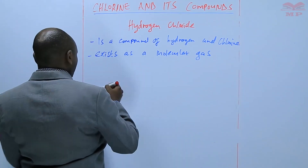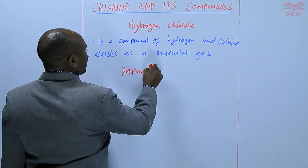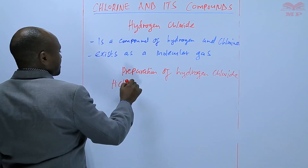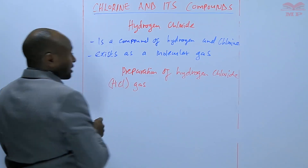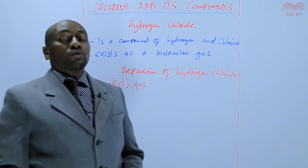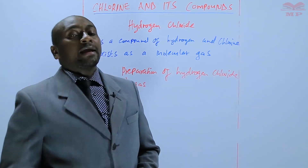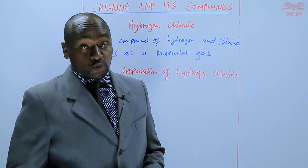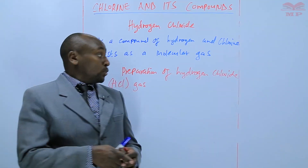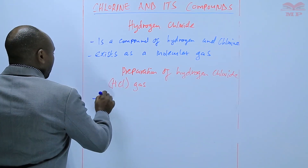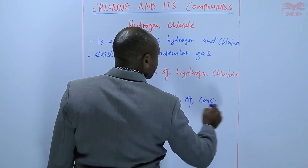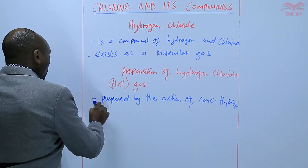Preparation of hydrogen chloride — HCl gas. Hydrogen chloride is prepared in the laboratory by the action of concentrated sulfuric acid on any chloride that doesn't form an insoluble salt. For example, we can use sodium chloride, also known as rock salt. So it is prepared by the action of concentrated sulfuric acid on rock salt.